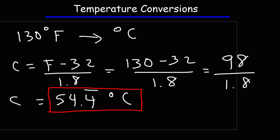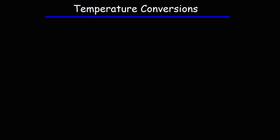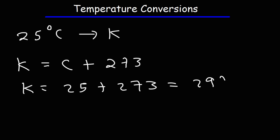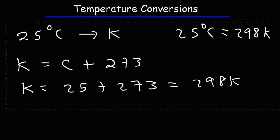Now let's talk about another unit of temperature: the Kelvin unit. If you're taking chemistry or physics, you'll be using this unit a lot. Let's say we want to convert 25 degrees Celsius into Kelvin — a common conversion. The Kelvin temperature is equal to the Celsius temperature plus 273.15, though we typically use 273. So replacing C with 25: it's 25 plus 273, which equals 298 Kelvin. Thus 25 degrees Celsius equals 298 on the Kelvin scale.